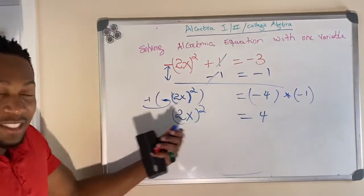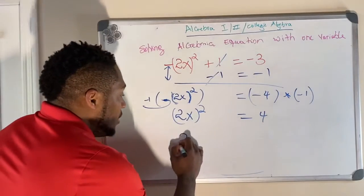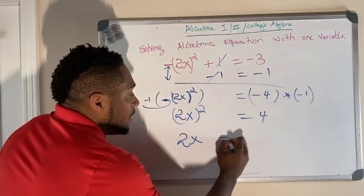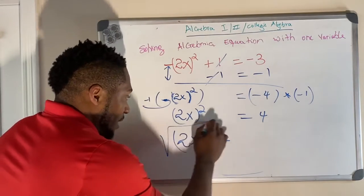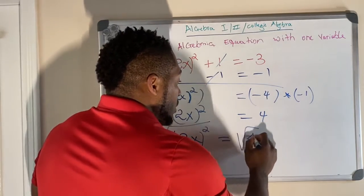So now what we're going to do here is take the square root of both sides. So that means 2x is equal to... the square root of 2x², let me write it this way, is equal to the square root of 4.